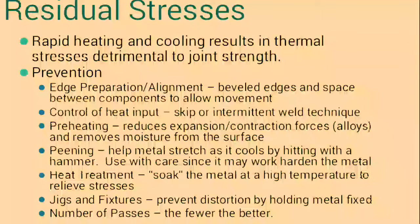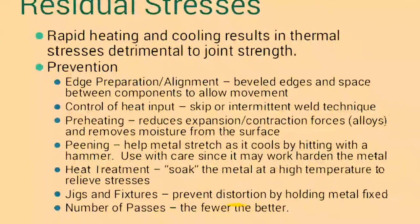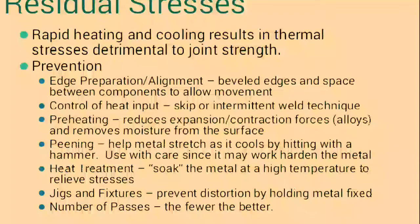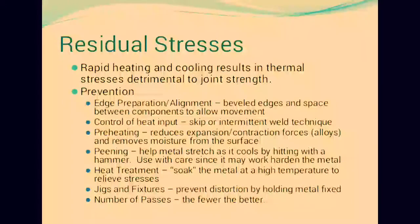Preheating reduces expansion or contraction forces, removes moisture from the surface. Peening helps metal stretch as it cools by heating with a hammer. Heat treatment — heating the metal at high temperature — relieves stresses. Jigs and fixtures prevent distortion by holding the metal fixed.